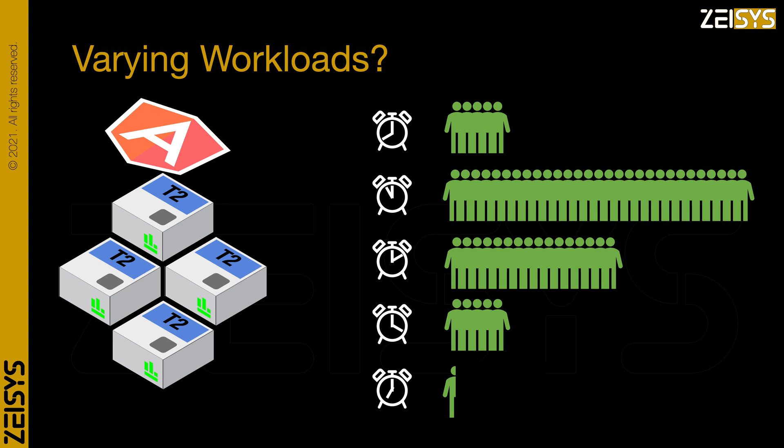Another common problem is that the number of users varies by the time of the day. Early morning has two users, noon 30, evening 15, and by night the number of users drops to zero. One solution is to have servers required to optimally support 30 users, 24-7. This is very wasteful.